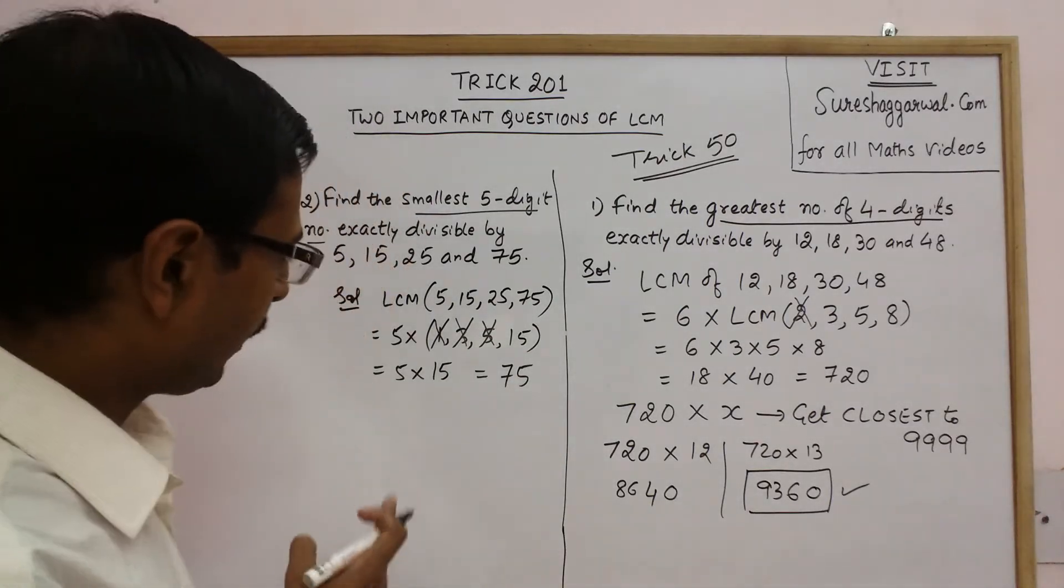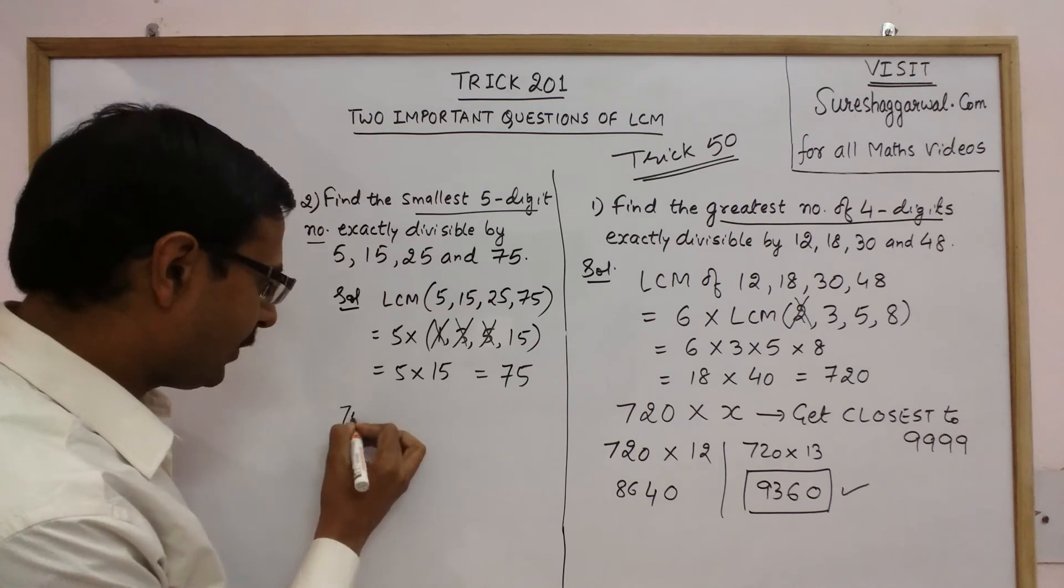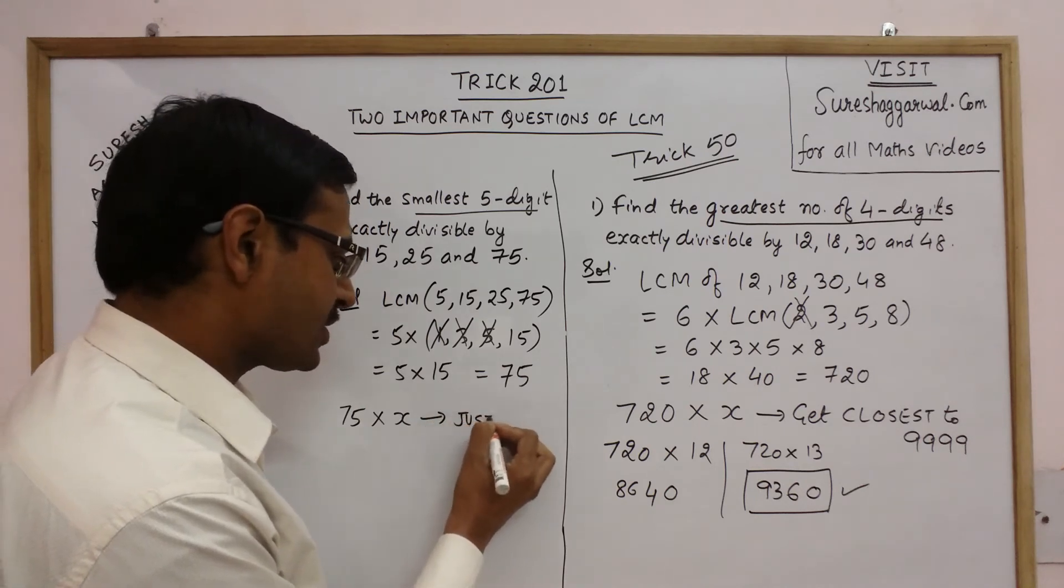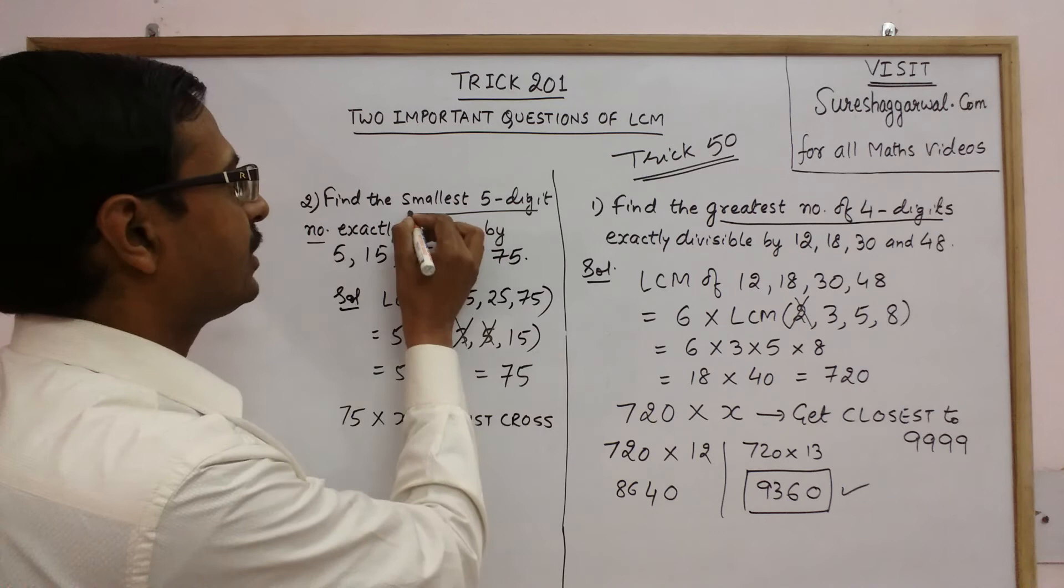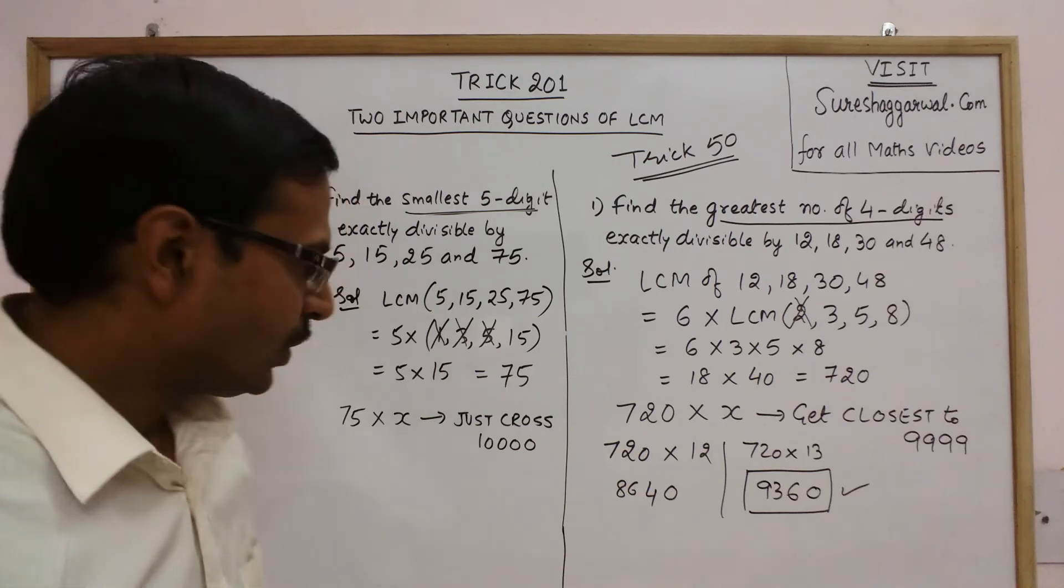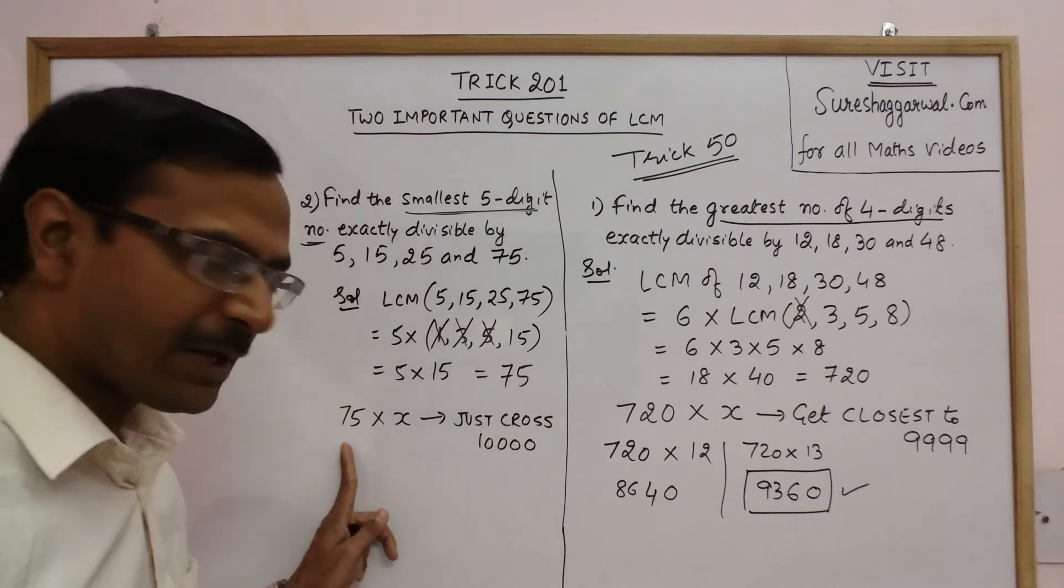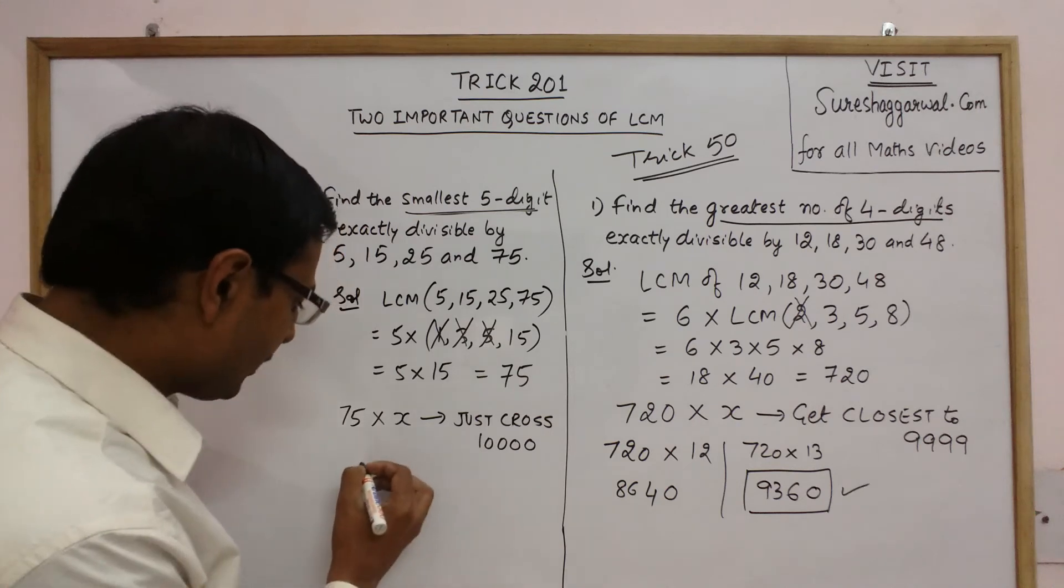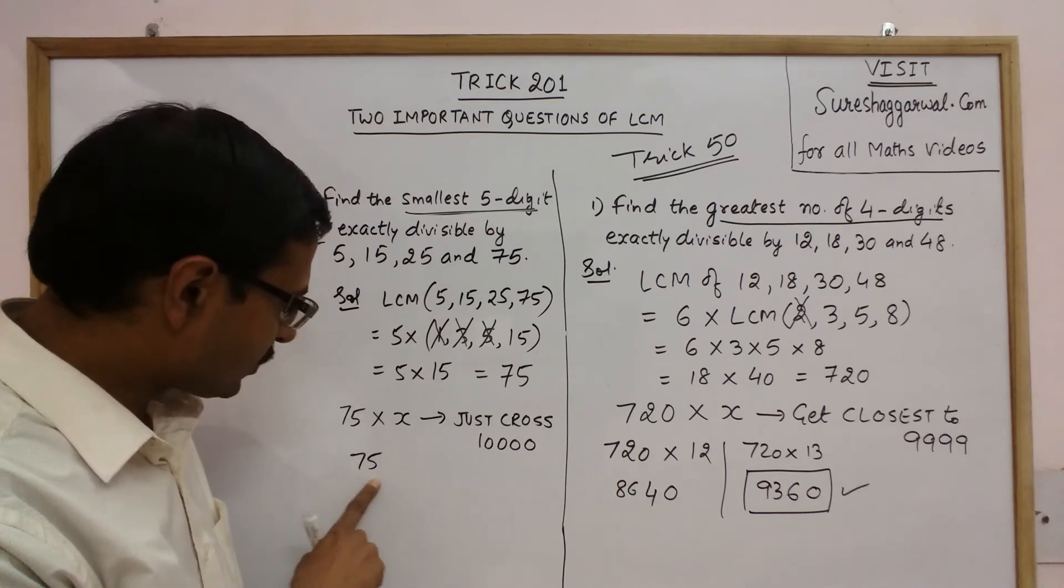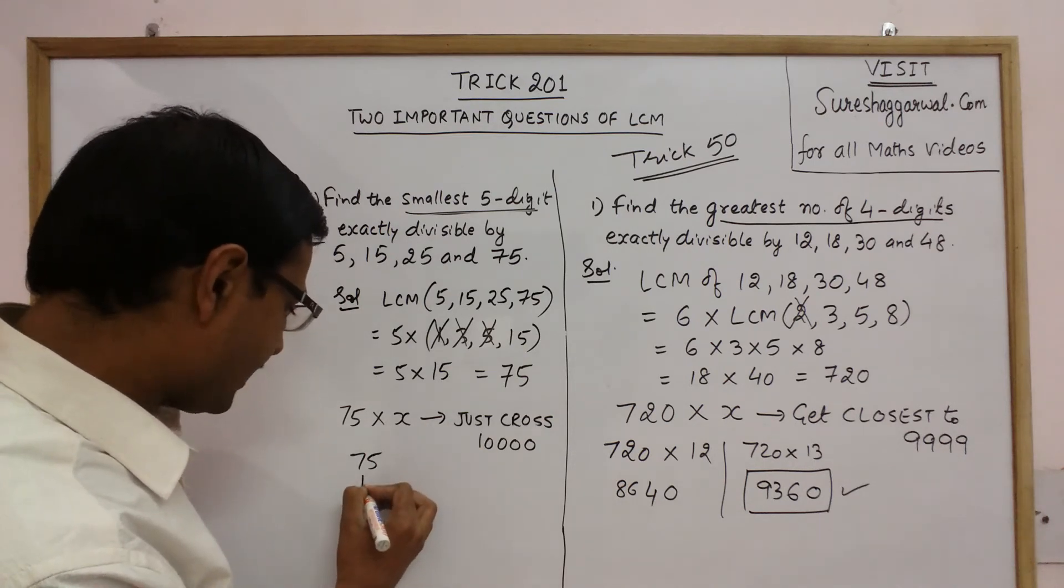Now once you have found out the LCM of these four numbers we just need to find the number whose product with 75 will just cross 10000. So this is the smallest five digit number, that is 1 followed by four zeros. So I need to find out what is that number which is just beyond 10000 which is a perfect multiple of 75. So let me just have a logical guess. Obviously the number will be more than 100 because 7500 is below 10000.